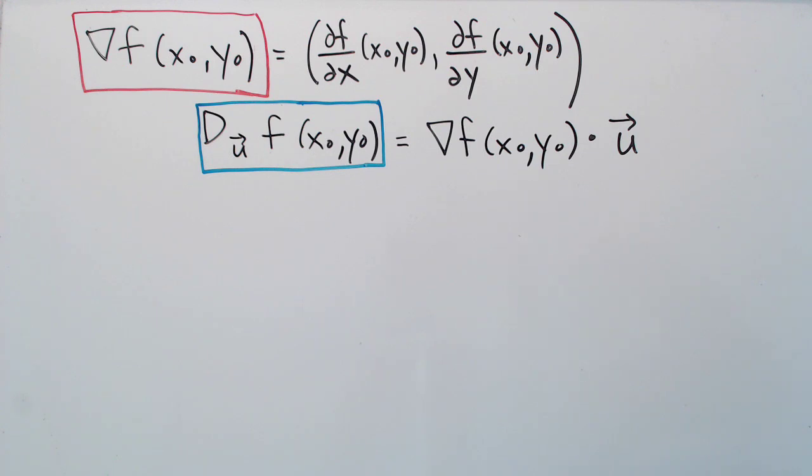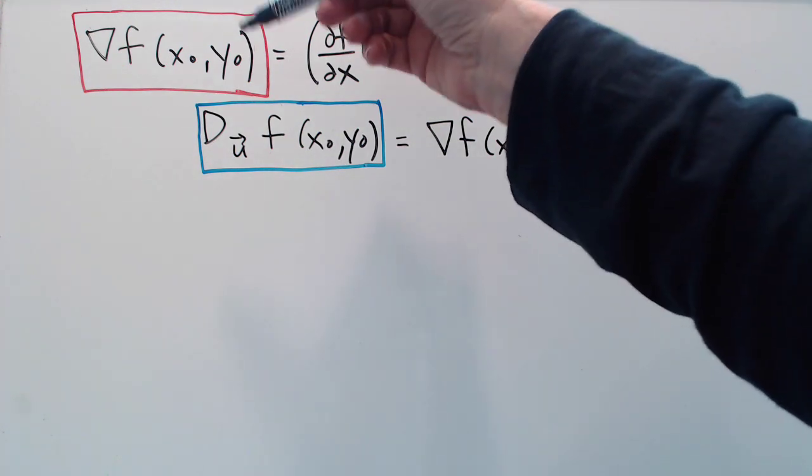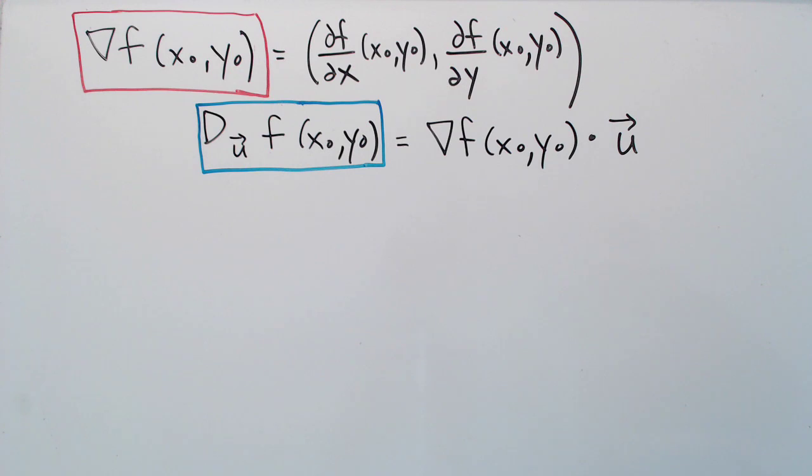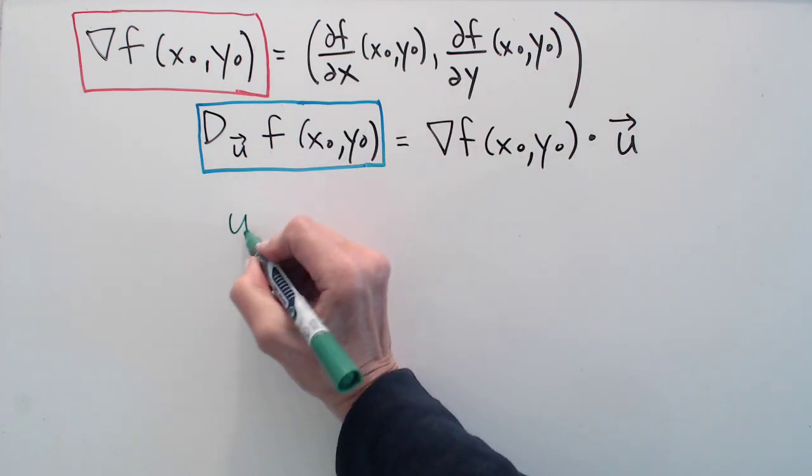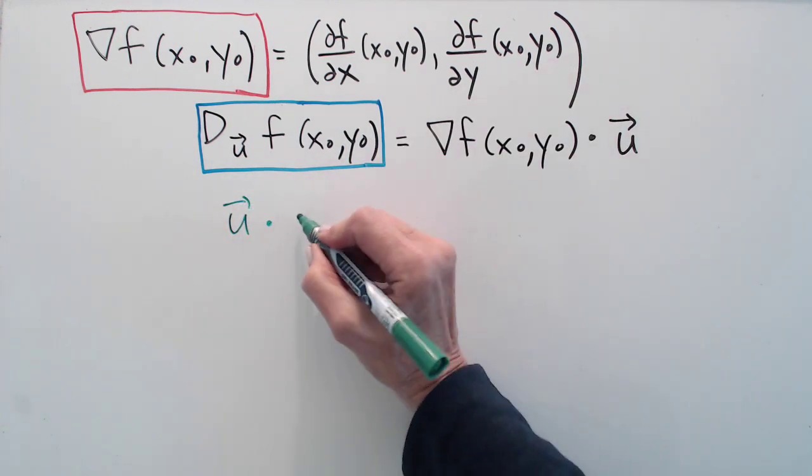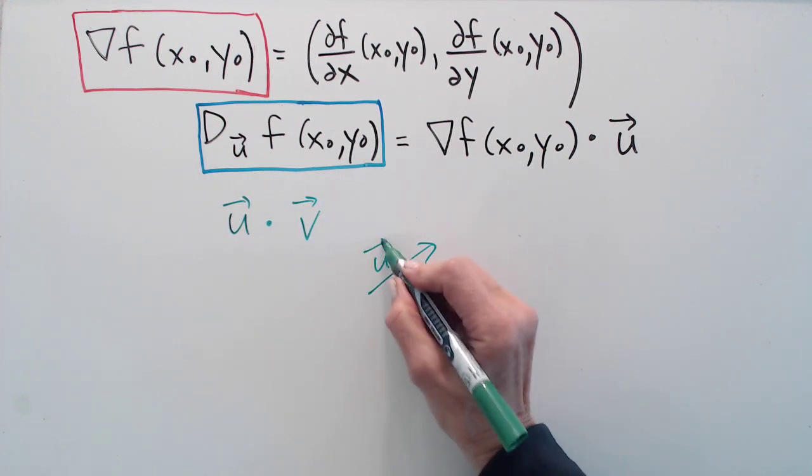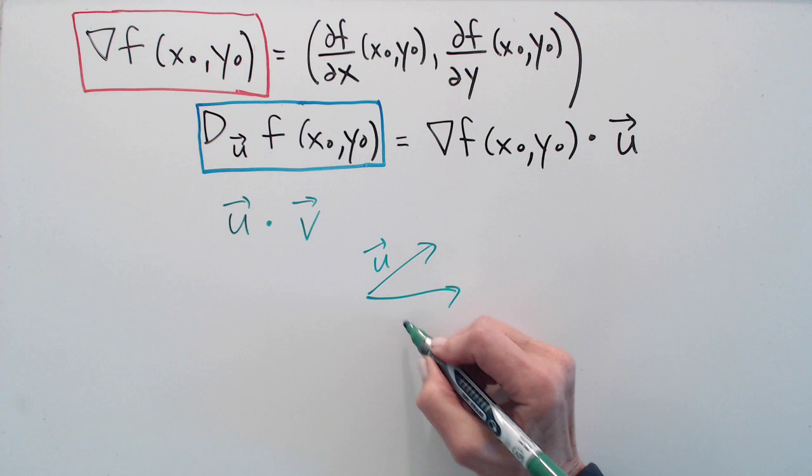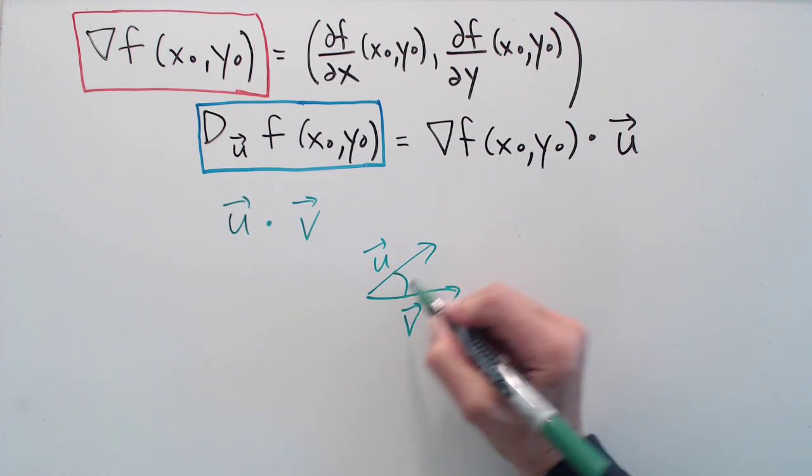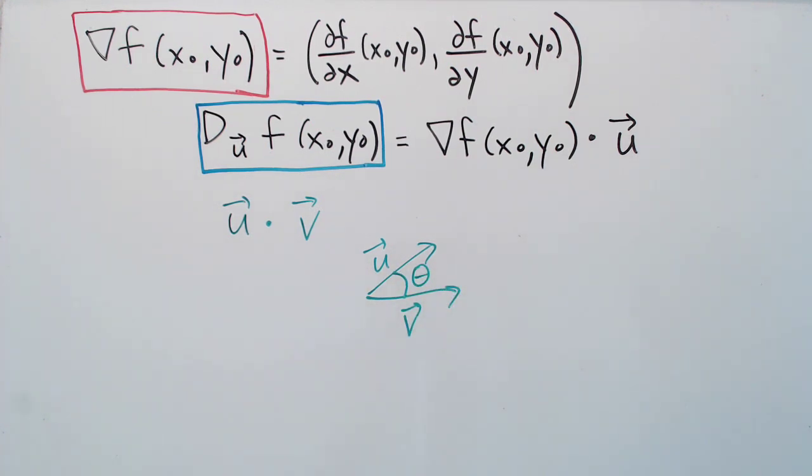Now in this video I want to try and convince you that some of the important properties of the gradient are actually derived from features of the directional derivative. So in order to see that we have to take a side trip for a moment and recall an alternate definition of the dot product of two vectors. And let's let theta be the angle between those two vectors.